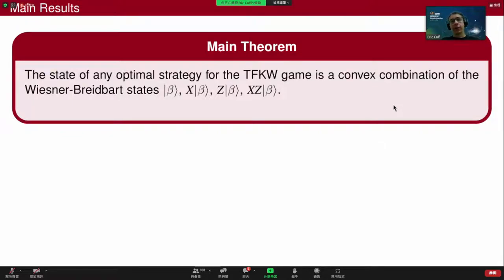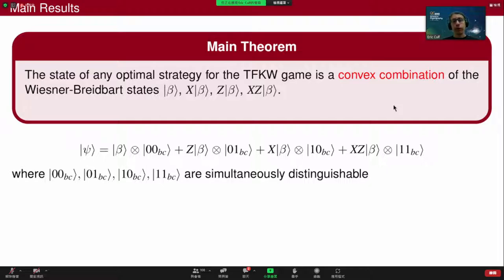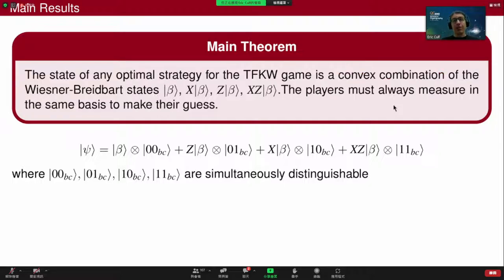The natural question from the self-testing point of view is whether these are the only optimal strategies, and with some important caveats, this question does in fact have a positive answer. Our main result is that any optimal strategy for this TFTW game is not exactly a single bright-red state but rather a convex combination of these states, where by convex combination we mean a state of this form: the part on Alice's space is a Vicsek bright-red state, and the part on Bob and Charlie's space is simultaneously distinguishable.